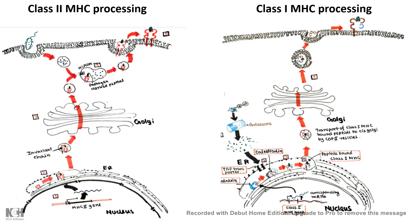After that, when the vesicle fuses with the endosome, the incoming pathogenic antigens are loaded onto the groove of the class 2 MHC, and the complex is then displayed onto the surface of the cell.